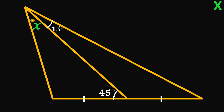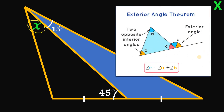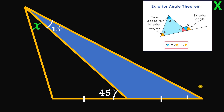Our goal is to solve for the measure of angle x. Let's focus on this triangle and use the exterior angle theorem: the two opposite interior angles add up to the exterior angle. We have 15 degrees and an exterior angle of 45 degrees, so 15 degrees plus this angle equals 45 degrees. Therefore this other angle must equal 30 degrees.